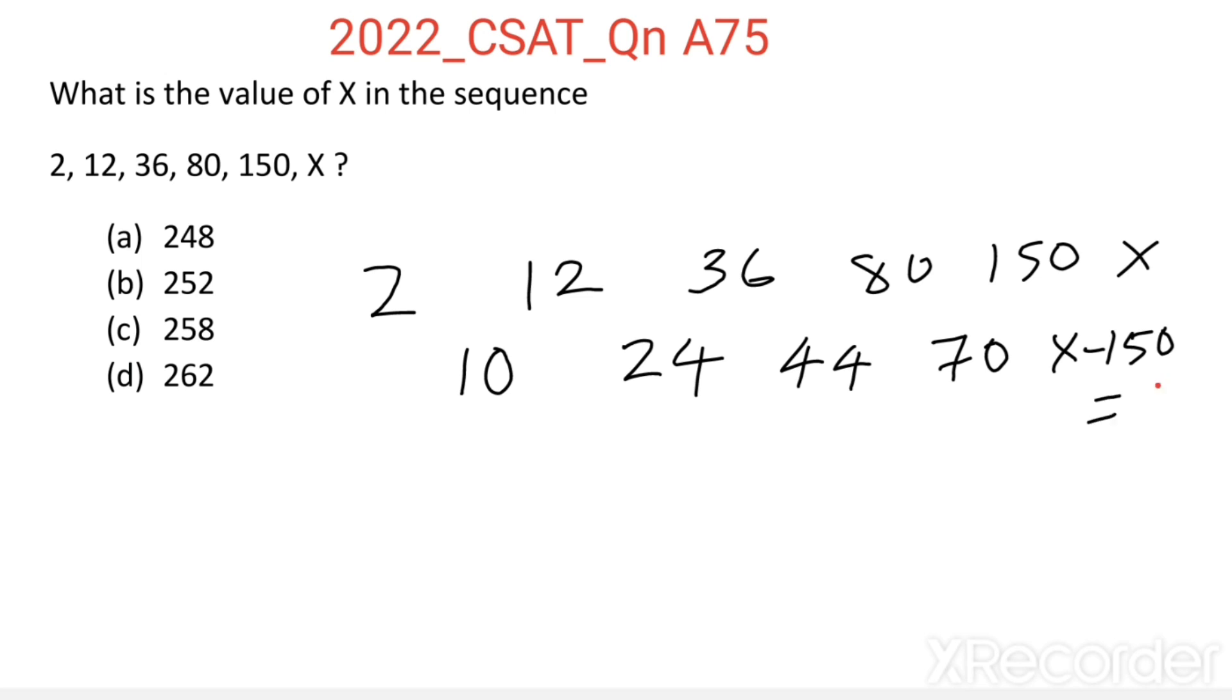So let us take this as P. Now we didn't get any clue from here, so again find the difference between adjacent terms: 24 minus 10, which is equal to 14; 44 minus 24 is 20; 70 minus 44 is 26; then P minus 70.